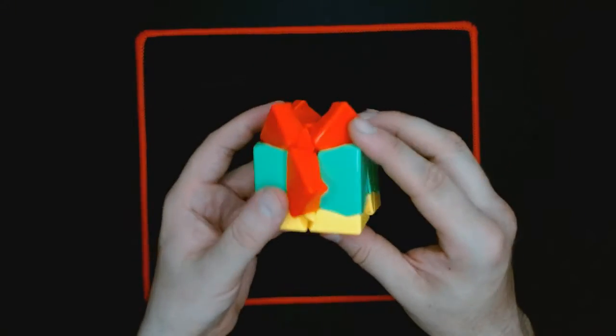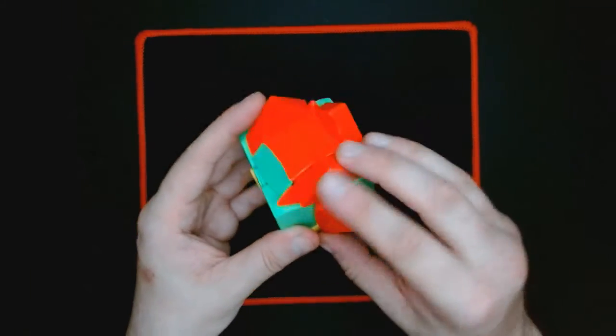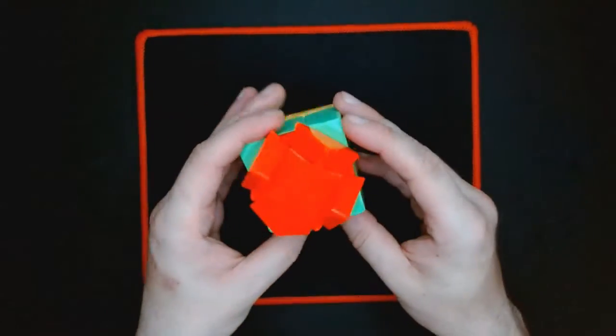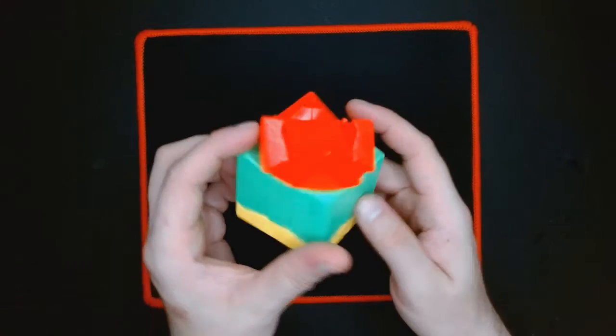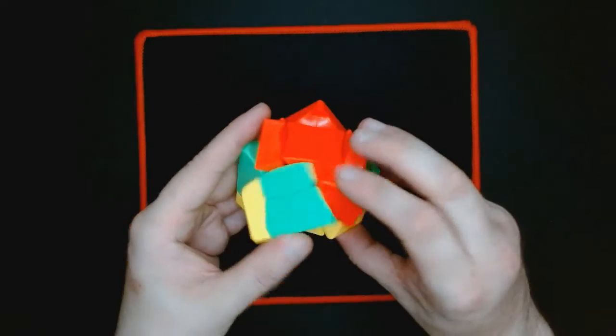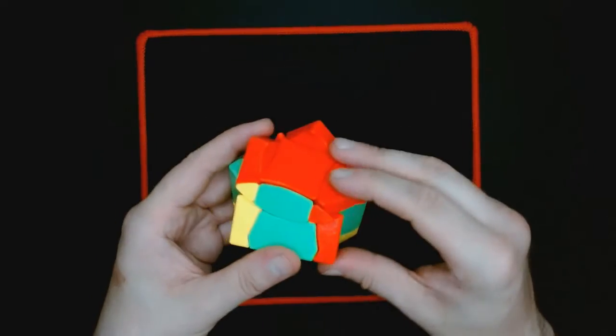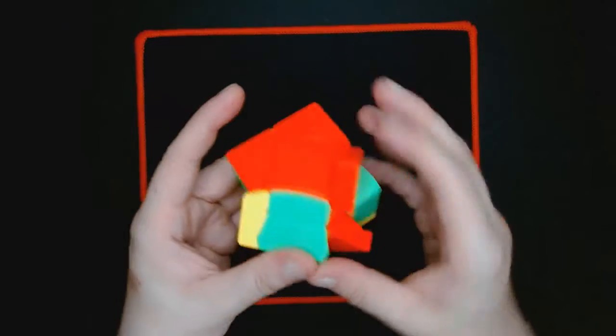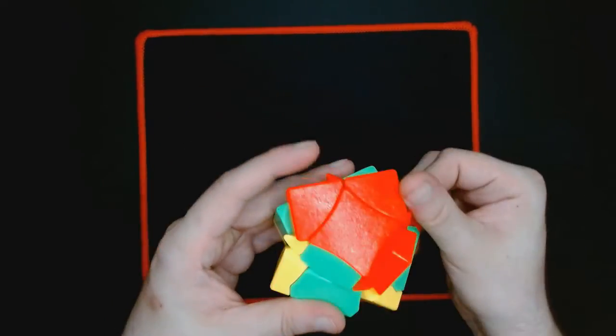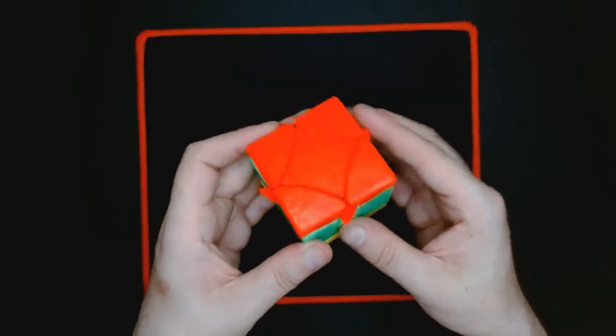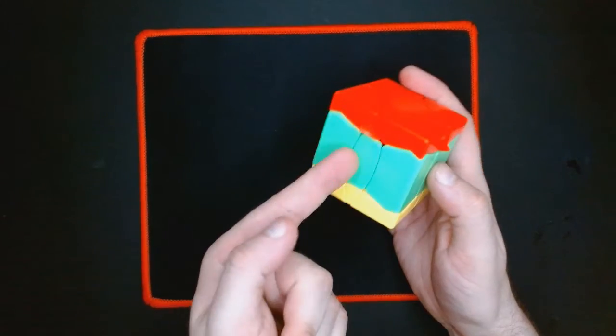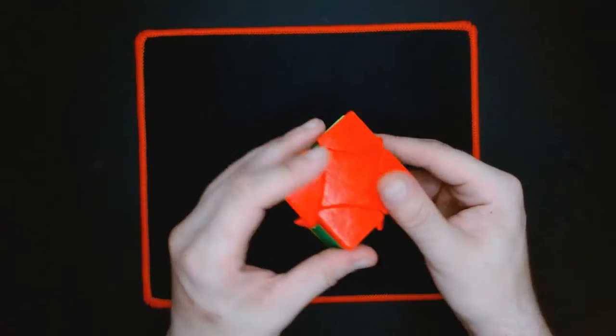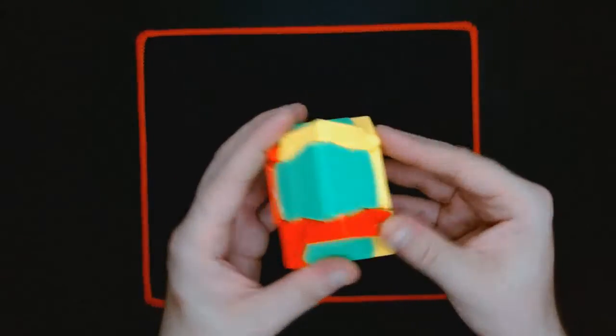There we go. Luckily we didn't get the parity. It's just the same as a Fisher cube parity, where just one of these needs to be flipped. I don't know if I get a parity on this. Now we gotta do...